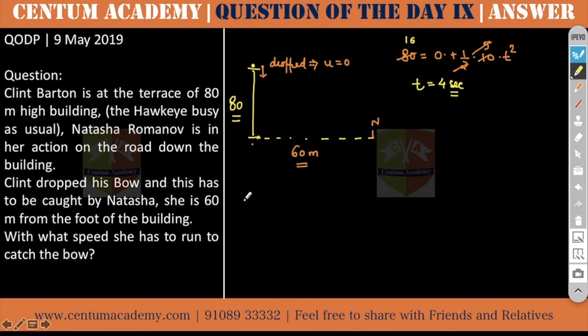So speed is equal to distance upon time, which equals 60 divided by 4. So answer will be 15 meters per second because everything was in meters.